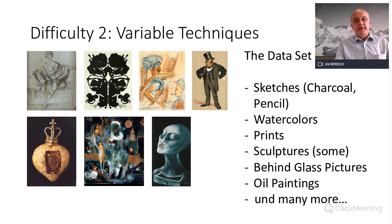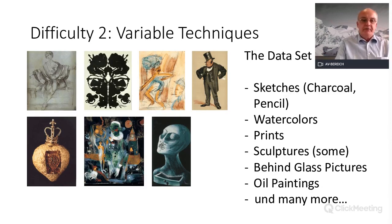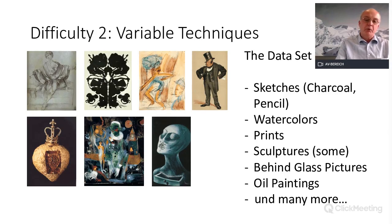The second difficulty is that the style of a painter is reflected in variable techniques — like sketches, watercolor, paintings, prints, sculptures. There are some sculptures in this dataset but not many. There are behind-glass pictures mainly from Heinrich Campendonk, oil paintings, and many other techniques.